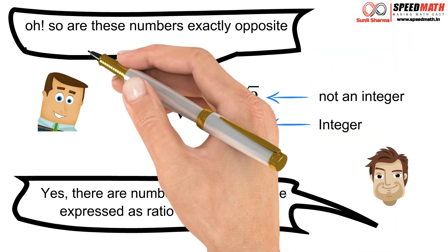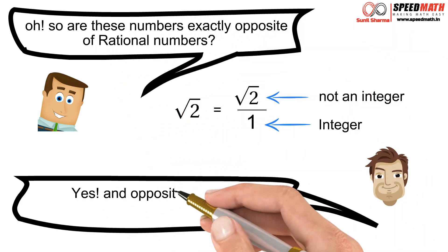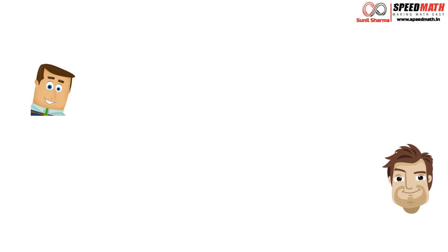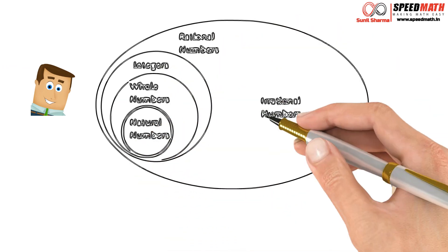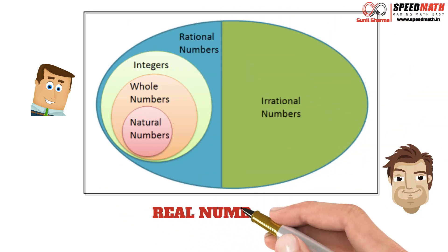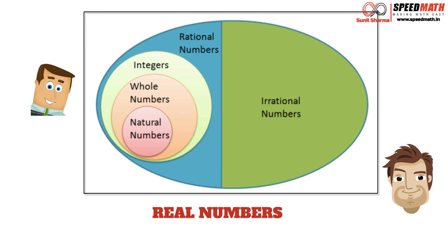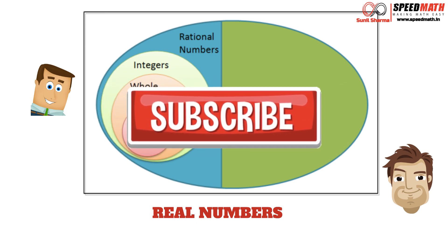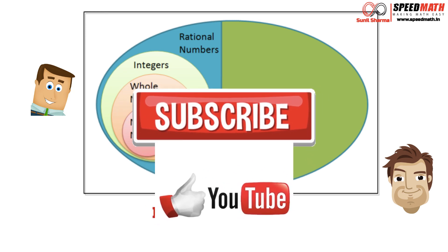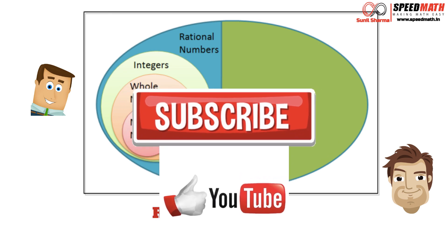Mr. Logic says: wow, so these numbers are exactly opposite of rational numbers! Mr. Math says: yes, and the opposite of rational is irrational, so we call these irrational numbers. We now have two different sets: rational numbers and irrational numbers. The entire collection of rational and irrational numbers is termed real numbers. I hope you enjoyed learning about real numbers — if you liked it, share it with your friends and hit the like button. Thank you for listening, peace!